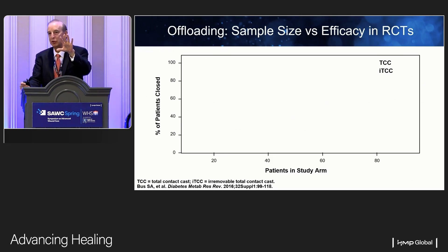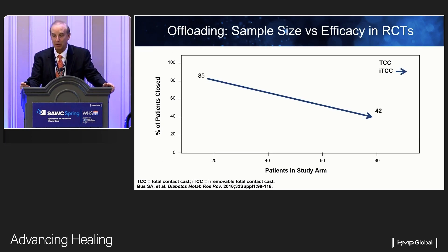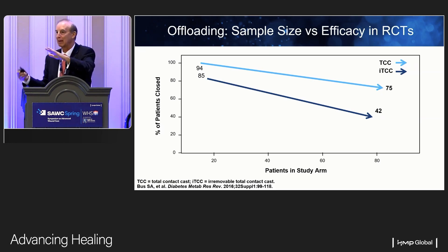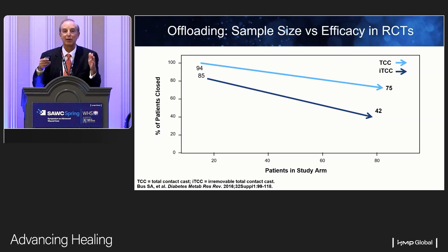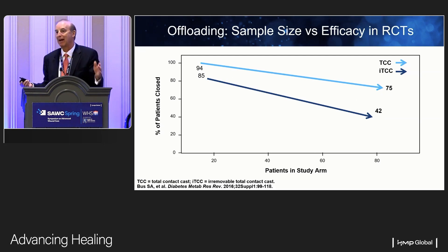To illustrate what quality means, consider sample size using offloading — total contact cast and instant total contact cast. When the sample size was small, less than 20 patients, healing was spectacular: 94% and 85%. But as the sample size grew to about 80 patients using the same technologies, the healing rate came down. As you get a larger sample size — a higher quality study — you begin to get closer to the truth. This shows why quality and sample size in efficacy studies are very important.